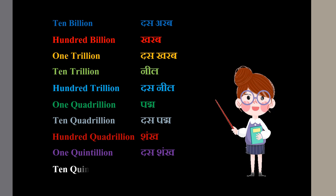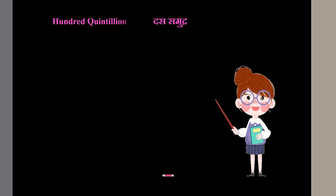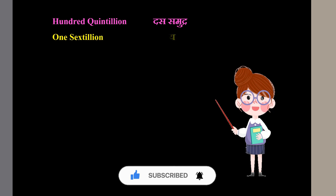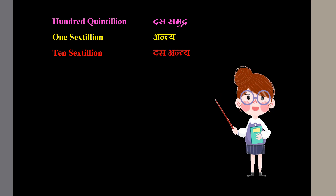10 quintillion means Samudra. 100 quintillion means 10 Samudra. 1 sextillion means Antya. 10 sextillion means 10 Antya. 100 sextillion means Madhyam.